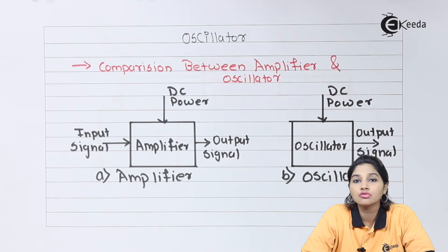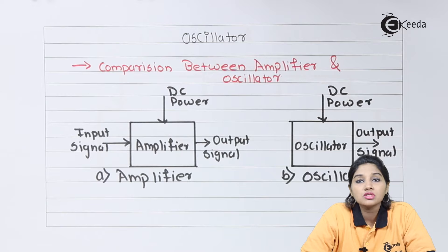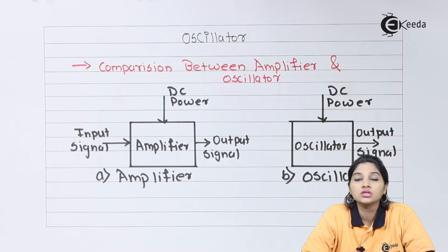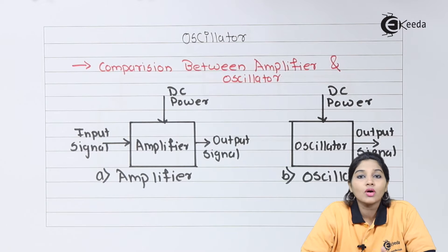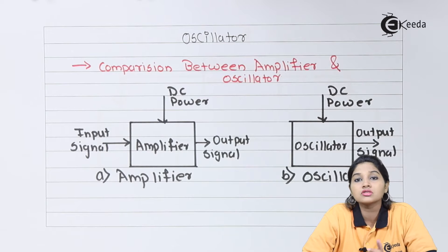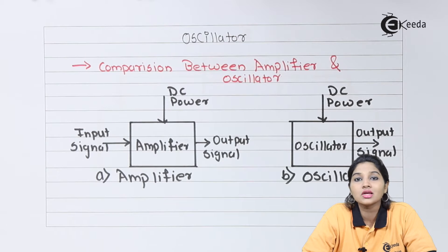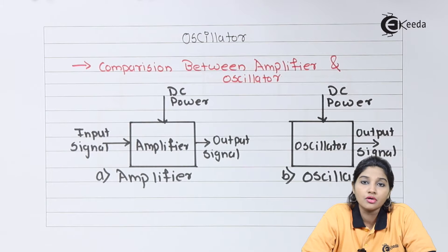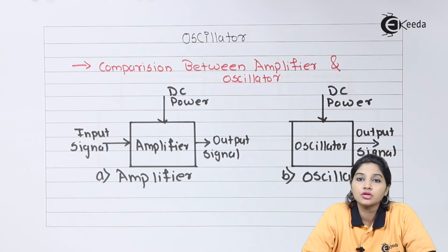An oscillator is a circuit which produces output having constant amplitude and desired frequency without any input signal. But how can an oscillator produce a signal at the output with no input? It is because the oscillator consists of passive as well as active components like inductors, capacitors, and resistors. At room temperature, these components consist of free electrons, and movement of these free electrons causes generation of a noise signal or noise voltage. When the oscillator circuit is turned on, this noise voltage is amplified by the oscillator and produces a signal at the output. This noise voltage is not exactly a sine wave and is very small in amplitude, but it is enough to produce the output of the oscillator.